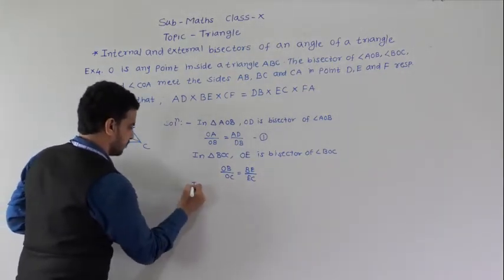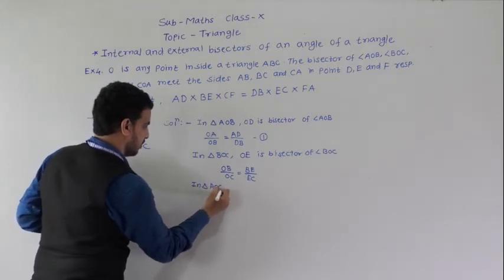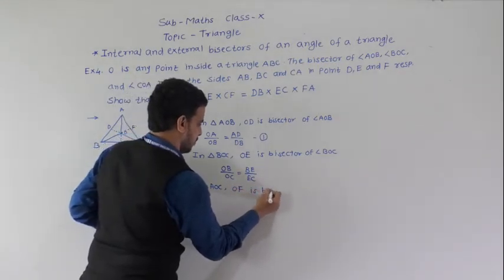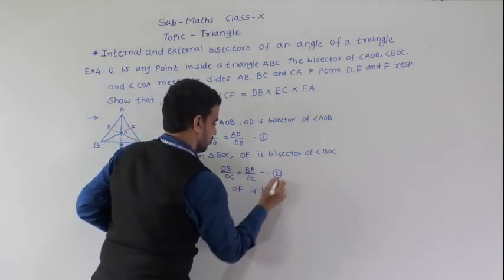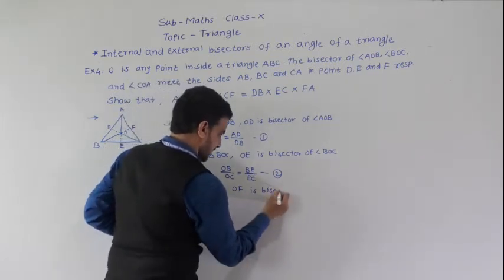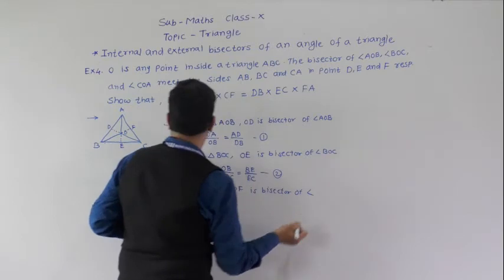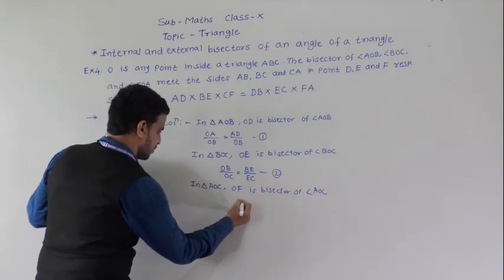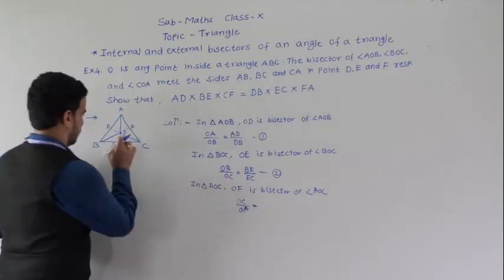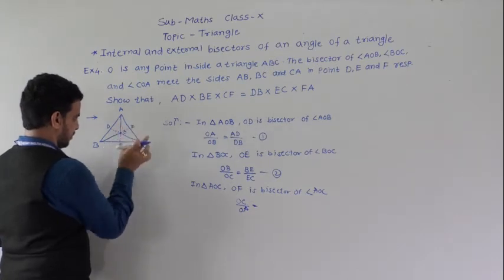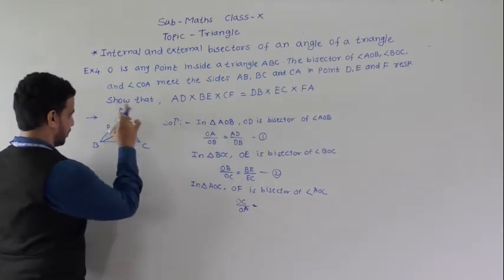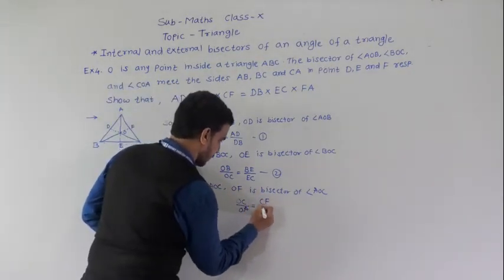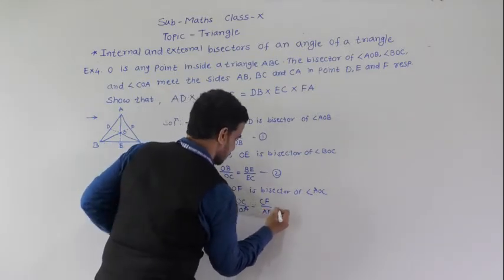In triangle AOC, OF is the bisector of angle AOC. Therefore OC/OA = CF/AF. This is equation 3.